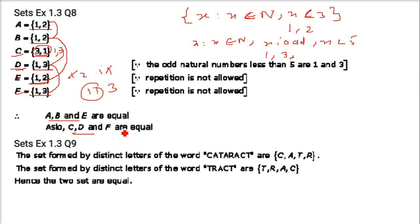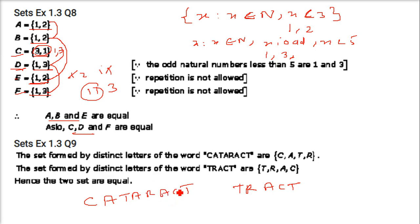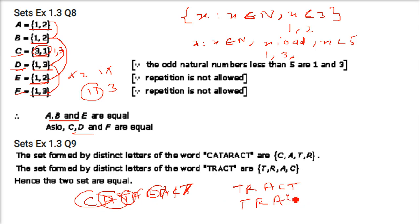Next: show that the set of letters needed to spell 'CATARACT' equals the set needed to spell 'TRACT'. TRACT = {T, R, A, C, T}. CATARACT = {C, A, T, A, R, A, C, T} — removing repeated letters gives {C, A, T, R}. Both sets contain exactly T, R, A, C, so they are equal.